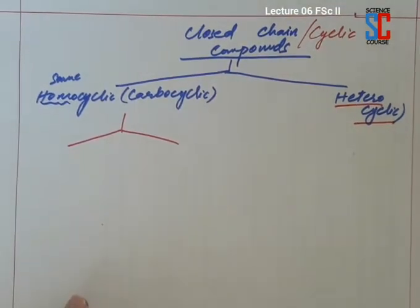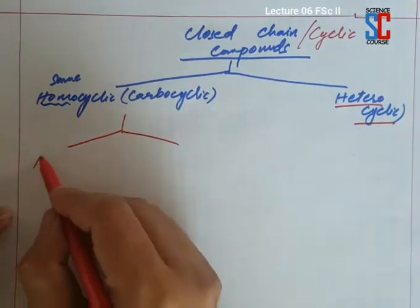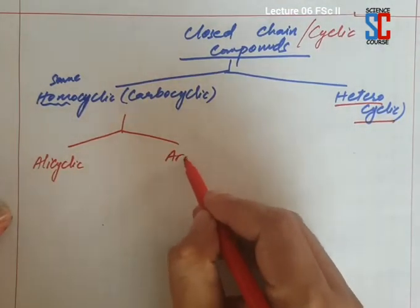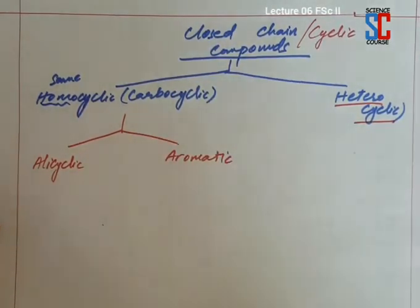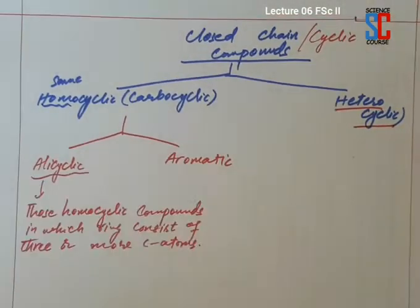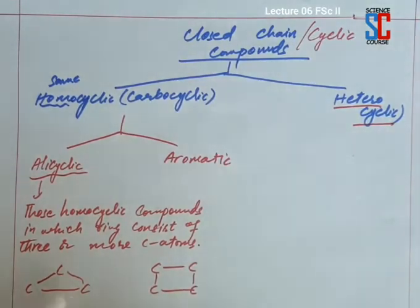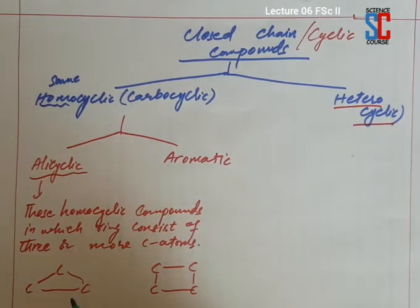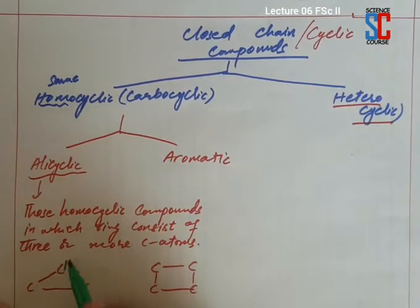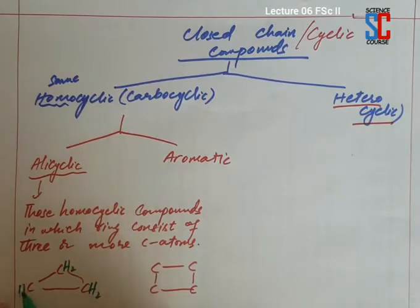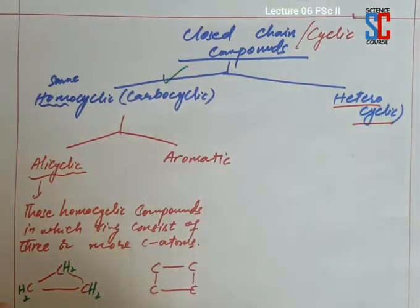Homocyclic compounds are further classified into 2 types: alicyclic and aromatic compounds. Alicyclic compounds are those cyclic compounds in which the link consists of 3 or more carbon atoms. For example, a link with 3 carbon atoms or a link with 4 carbon atoms. You have to satisfy the valency of carbon — carbon attached with 2 carbon atoms has 2 remaining valencies, so justify this valency by attaching hydrogen. Remember, hydrogen is not part of the ring; the ring only consists of carbon atoms. So they are called carbocyclic, and since the ring consists of 3 or more carbon atoms, this is called alicyclic.